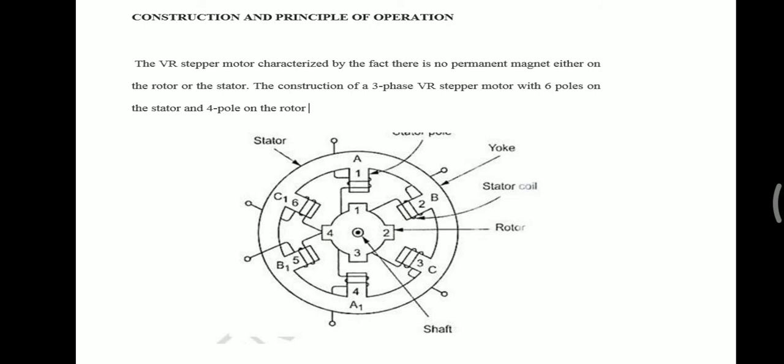Each stator pole carries a field coil or excitation coil. In case of even number of poles, the excitation coils of opposite poles are connected in series. The two coils are connected such that their mmf gets added. The combination of the two coils is called a phase winding.